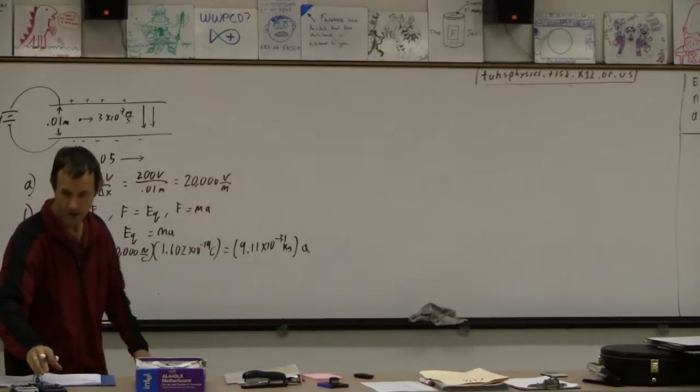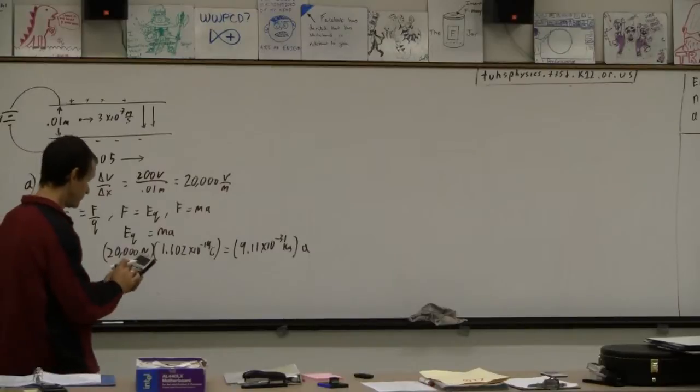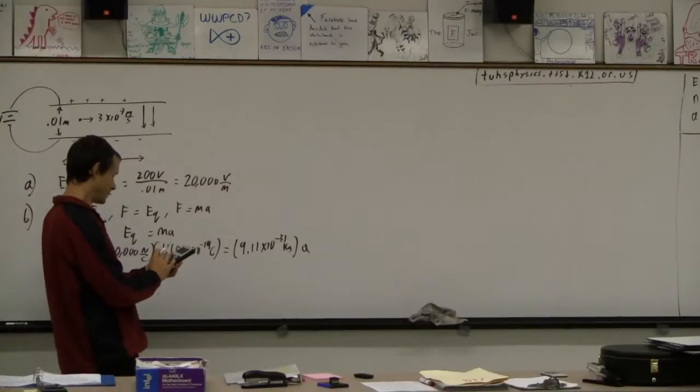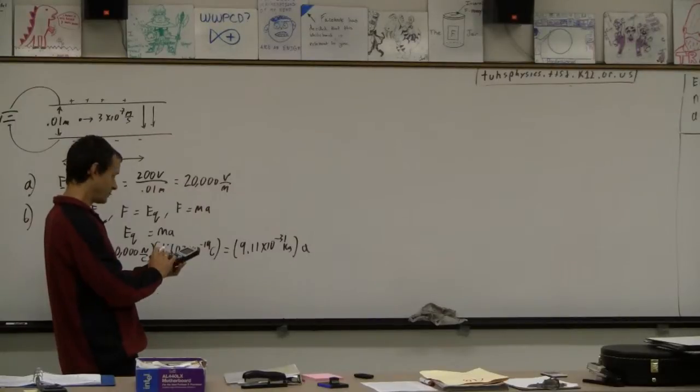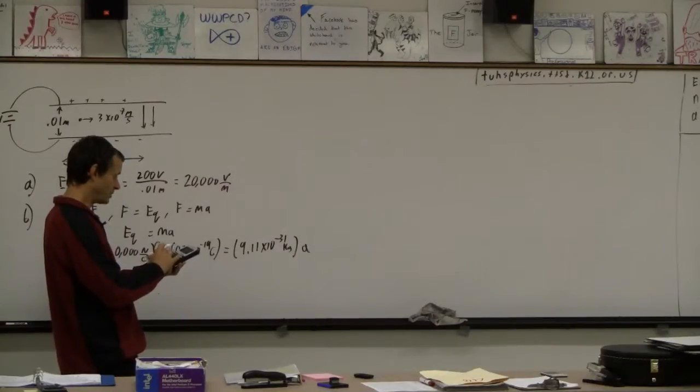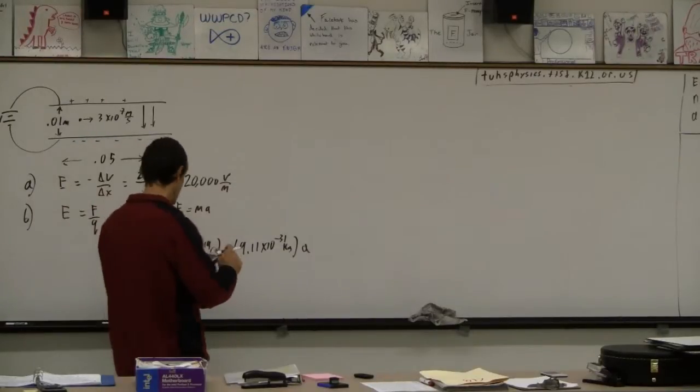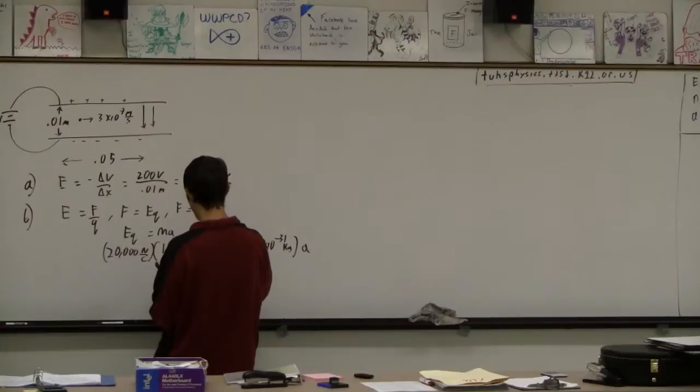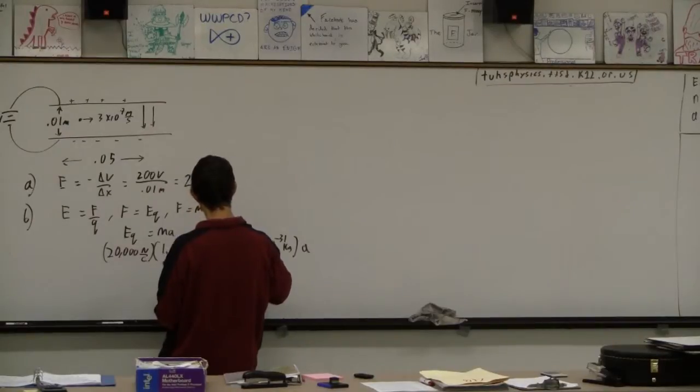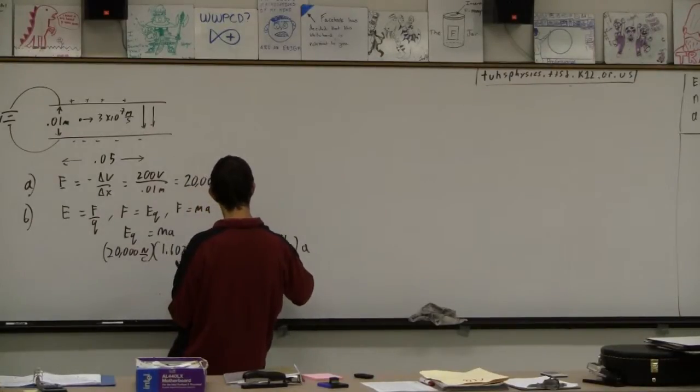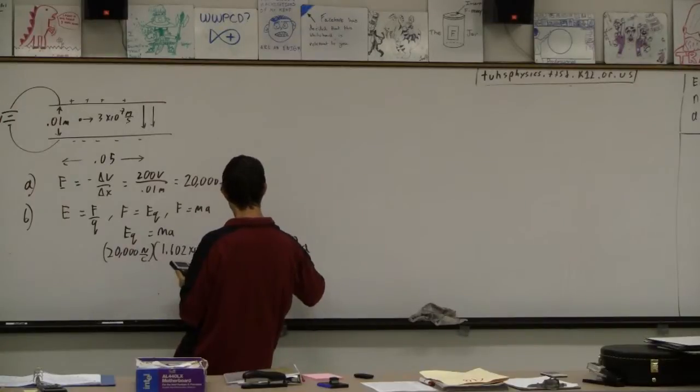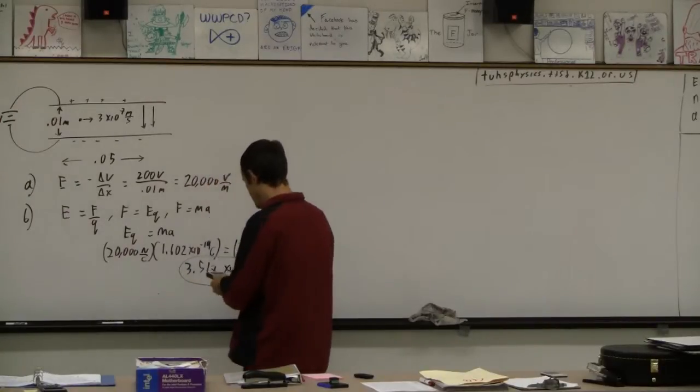So finally I've got to crack out a calculator. Okay, so I'm going to go 20,000 times 1.602 E minus 19 divided by 9.11 E minus 31. And this is going to be a lot of acceleration. So this is 3.517 times 10 to the 15th meters per second squared. And I'm going to store that thing.